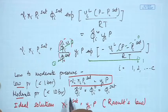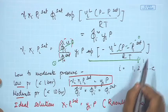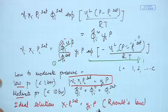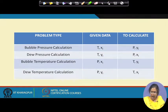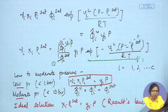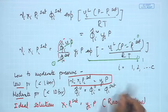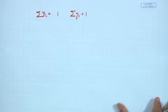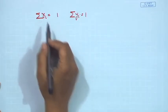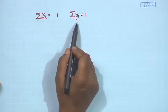When dealing with ideal solutions, x_i · P_i^sat = y_i · P, which is the famous Raoult's law. Depending on the situation — high pressure, low-to-moderate pressure, or ideal solution — we use the appropriate equation. The problem types remain: bubble pressure, dew pressure, bubble temperature, and dew temperature. We have c equations of this form along with two additional constraints: Σx_i = 1 and Σy_i = 1, which are also used to check trial-and-error guesses.